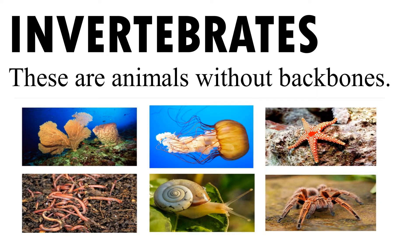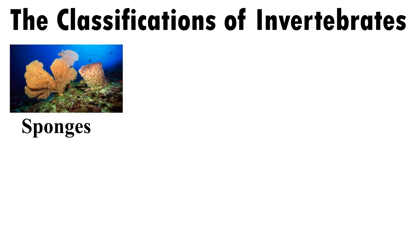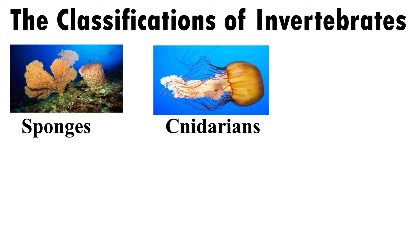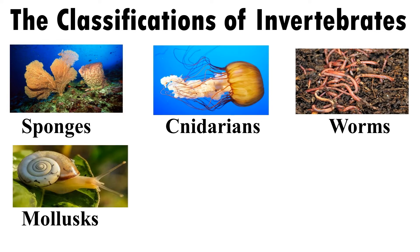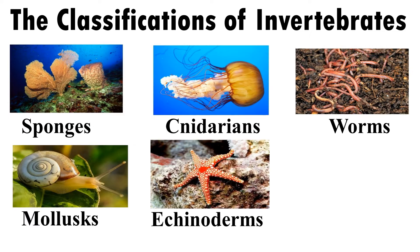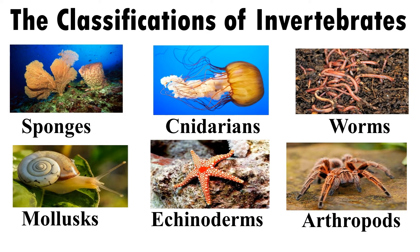There are different classifications of invertebrates: sponges, cnidarians, worms, mollusks, echinoderms, and arthropods.